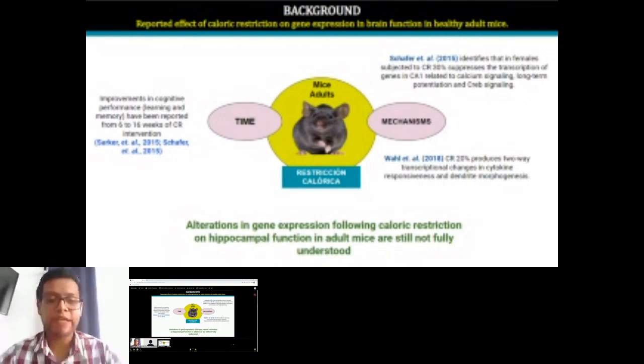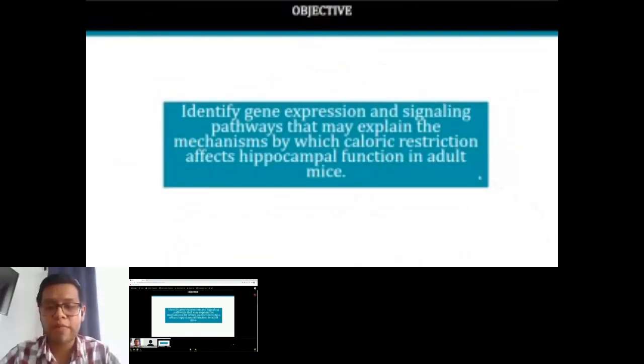These changes refer to a benefit at the cognitive level to increase the plasticity. That's why our aim was to identify the gene expression and signaling pathways that may explain how calorie restriction affects hippocampal function in adult mice.